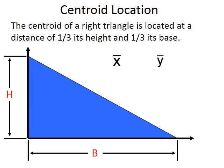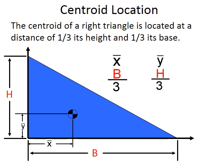Using the same conventions of H and B for a triangle, it's a little different. The formula for a right triangle is x-bar, the x-coordinate for the centroid, equals B over 3, and the y-location is H over 3.